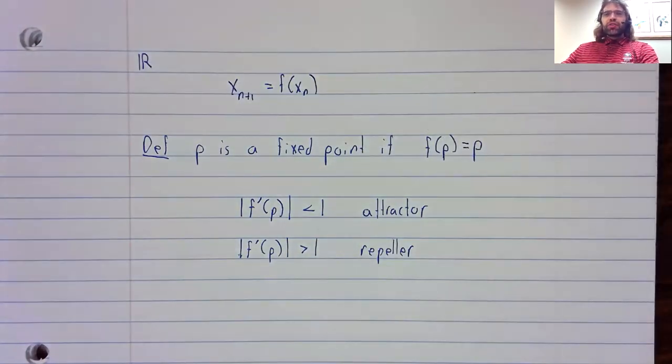In differential equations, if you want to know whether a fixed point is stable or unstable, you look at the largest eigenvalue in absolute value.